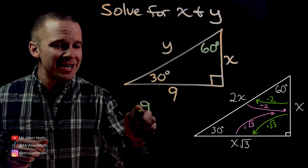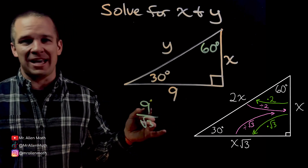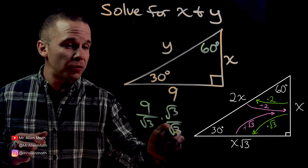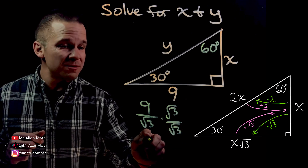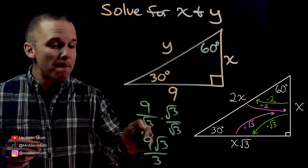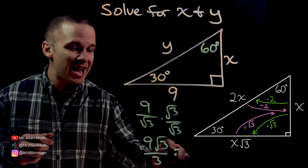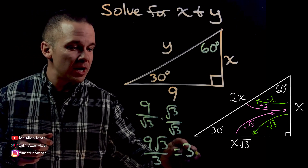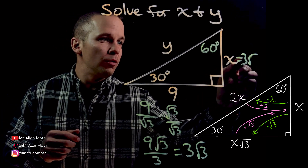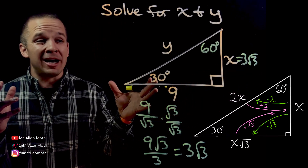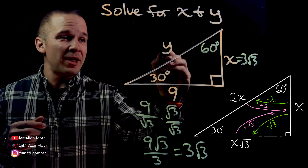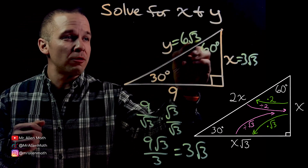So I've got nine divided by root three. I can't leave it like that — I've got to rationalize. I multiply by root three over root three, which gives me nine root three over three. Can I simplify? Yes. I get three root three. I've got X equals three root three. Easy money to get Y — I just double that, so Y equals six root three.